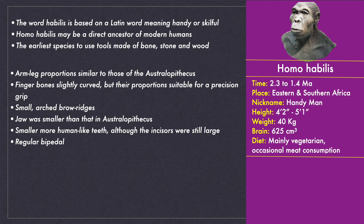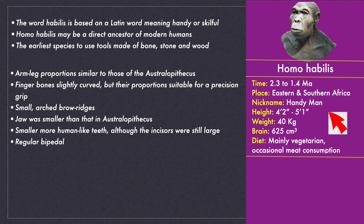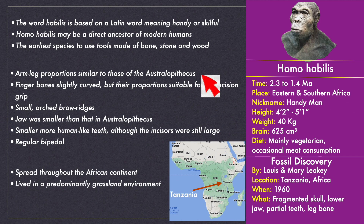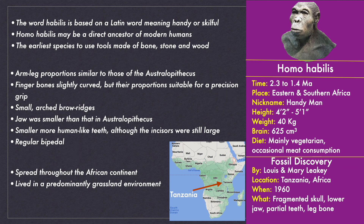The timeline and place of living of Homo habilis is similar to that of Homo rudolfensis. The word habilis comes from Latin, meaning handy or skillful. Homo habilis is the earliest species known to use tools and that's why they are called the handyman. Homo habilis may be our direct ancestor. They lived in a predominantly grassland environment and spread throughout the African continent. Homo habilis had some leftover ape features like arm-to-leg proportions, large incisors and slightly curved fingers, but also more human-like characteristics including small brow ridges, small jaw, smaller molar and premolar teeth, precision grip fingers and regular bipedalism. Their fossils were discovered by Louis and Mary Leakey in 1960 in Tanzania, where a fragmented skull, a lower jaw, partial teeth and some leg bones were found.